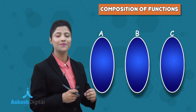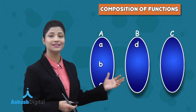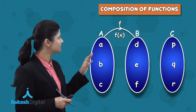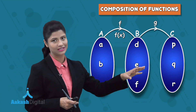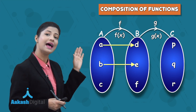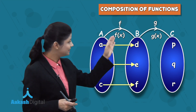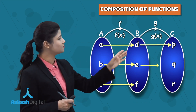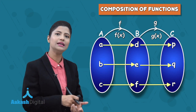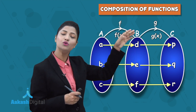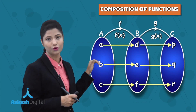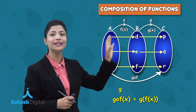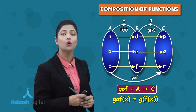Here you can see three sets. In set A, I have elements A, B, C. In set B, I have elements D, E, F, and in set C, I have elements P, Q, and R. Function F is defined from set A to set B, and function G is defined from set B to set C. So A has image D, B has image E, and C has image F.